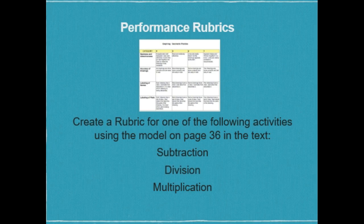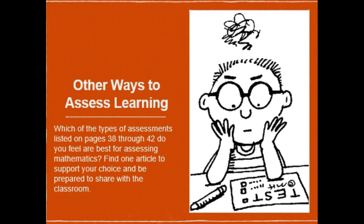Create a rubric for one of the following activities using the model on page 36 in the text: subtraction, division, and multiplication. Send a copy of your rubric to your instructor via the Canvas inbox. Which types of assessments listed on pages 38 through 42 do you feel are best for assessing mathematics? Find one article to support your choice and be prepared to share with your classmates via the Canvas announcement entitled Other Ways to Assess Learning.